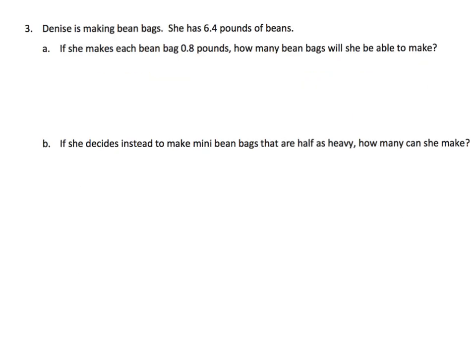The last slide for this video. Denise is making bean bags and she has 6.4 pounds of beans — 6 and 4 tenths pounds. If she makes each bean bag 0.8 pounds — 8 tenths of a pound — how many bean bags will she be able to make? So that means we're going to do 6.4 divided by 0.8, because we want to know how many of these 0.8s can fit into 6.4.